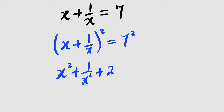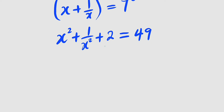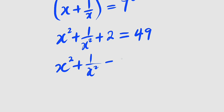So again, I would like to square this one again — squaring x plus 1 divided by x. Also square the right hand side. To the left hand side, we have the first term squared, that's x squared, plus the second term squared, that is 1 divided by x squared, plus 2 times the first term times the second term, which equals 2. This is equal to 7 squared, which is 49.